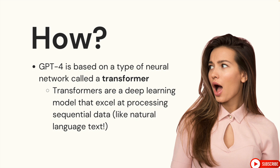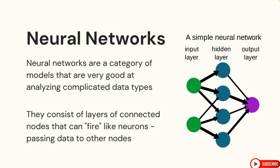Transformers are the type of deep learning model that powers the GPT family of models. Remember, it's GPT — generative pre-trained transformer. They work really well at processing sequential data, which is most commonly text. A little bit of recap on neural networks: they're a category of models very good at analyzing complex data types. They consist of connected nodes — structures that can fire like a neuron, passing data from one node to the next and eventually to the output layer.